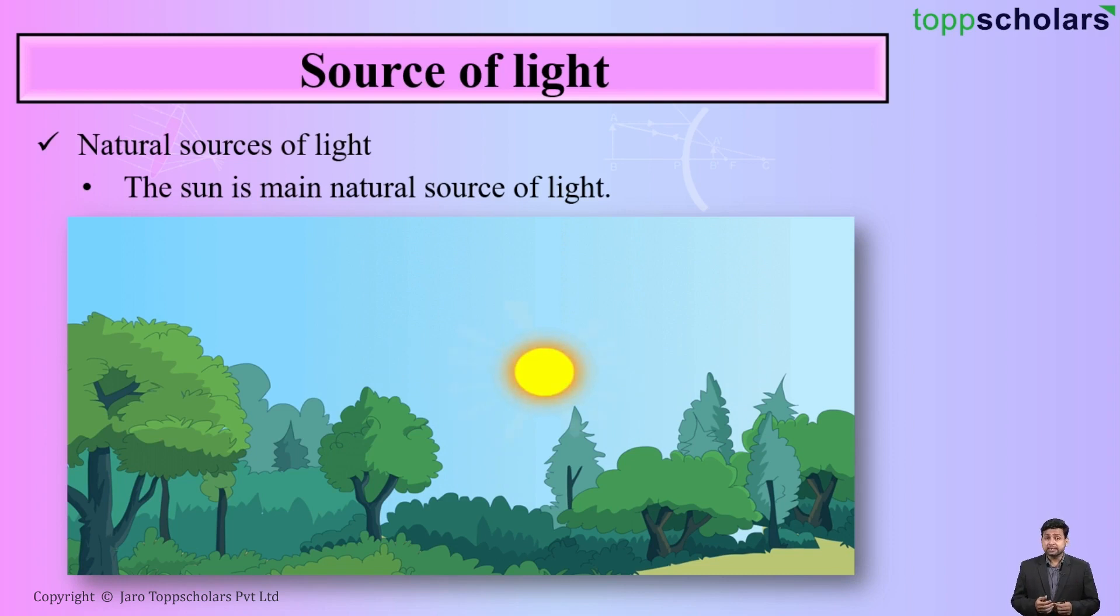For example, the sun. The sun always gives us light but does the sun need our help to produce the light? No. So this is nothing but a natural source of light.